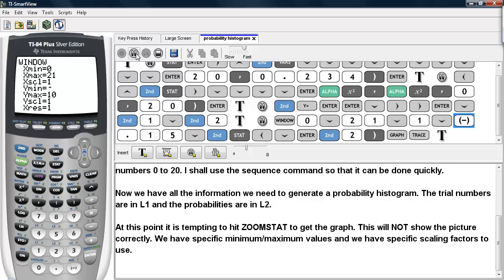The Y MIN, we're going to choose negative 0.15. These values will be above the X axis, so we want a little bit below, so we can see the picture. And the Y MAX is going to be the maximum value in our L2 list.